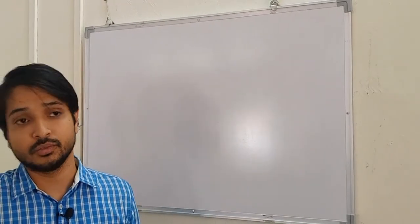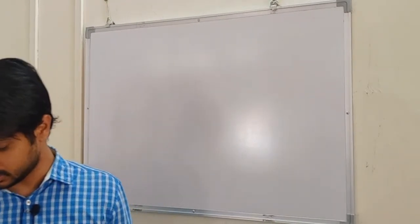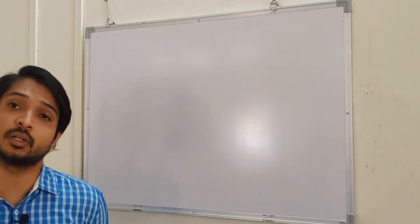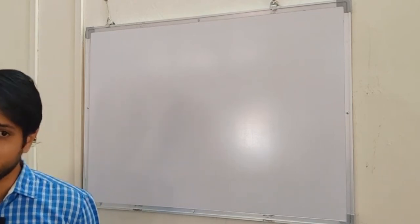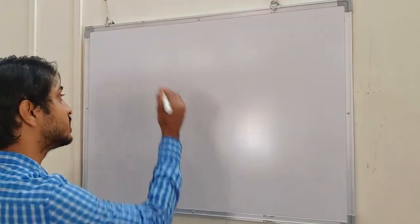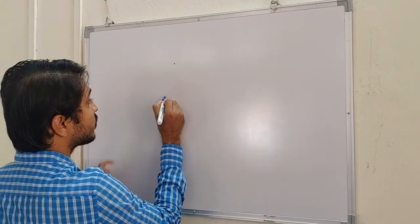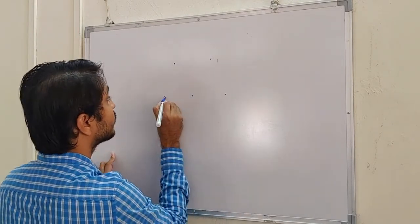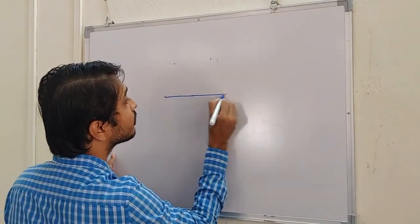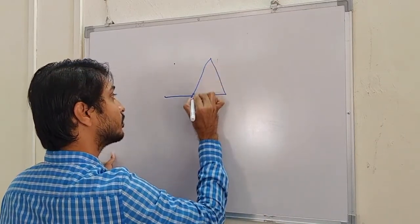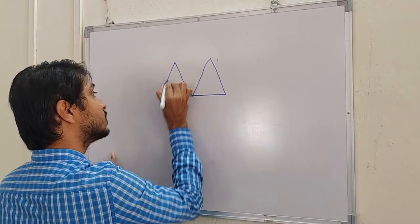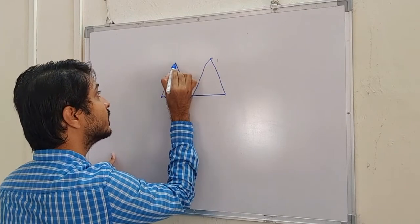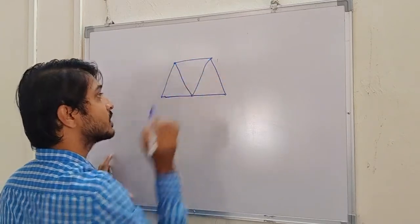We will now study the analysis of simple trusses. A truss is a type of structure in which all the members are subjected to only compression and tension — there will not be any moment. This is a simple truss, and you have seen these types of structures like in railway bridges. Those types of structures we call trusses.